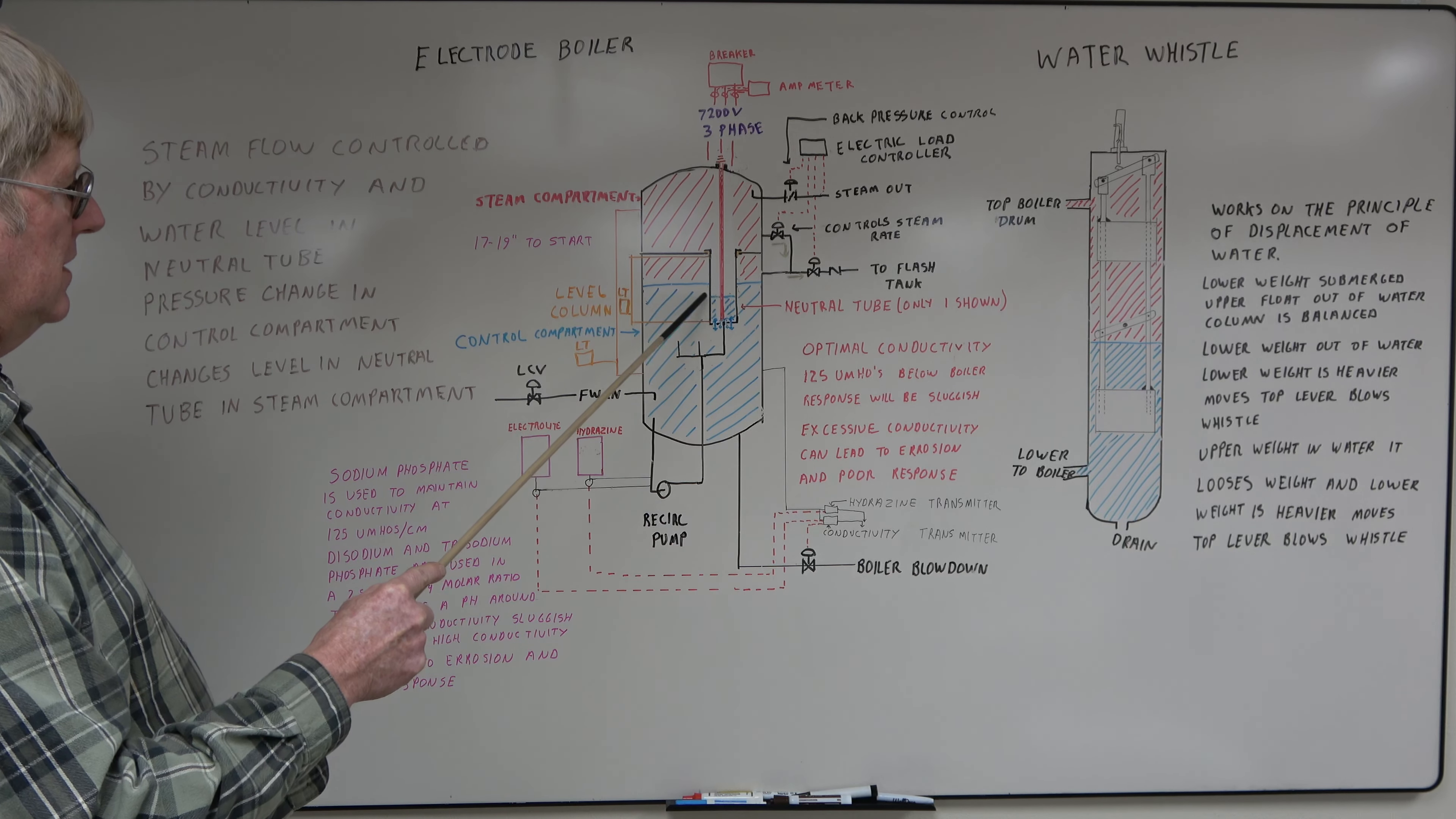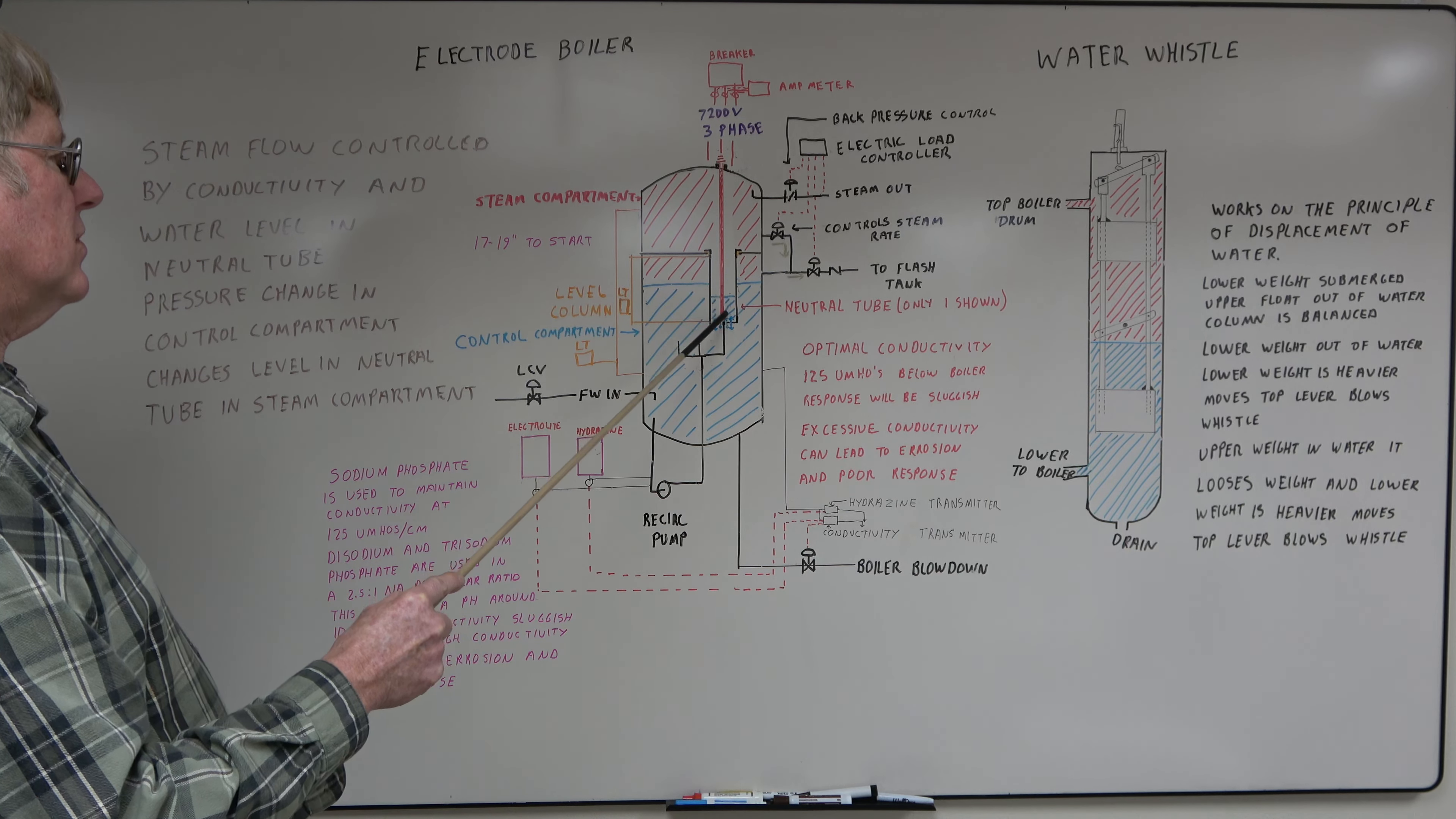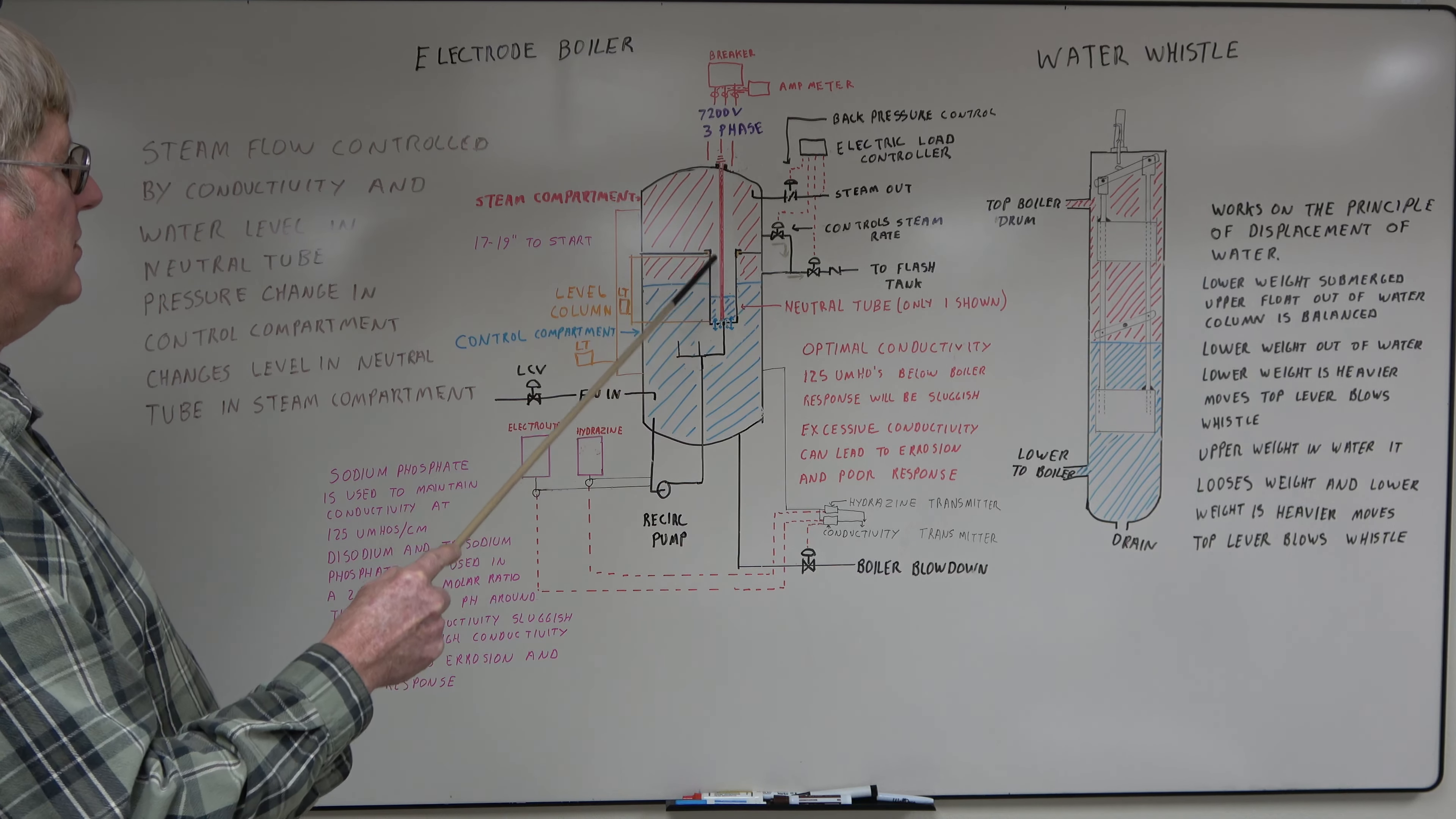The current comes in, enough conductivity to move the current goes across the neutral tube. Resistance in the water causes heat and the water is boiled.